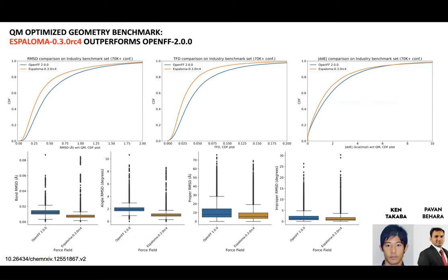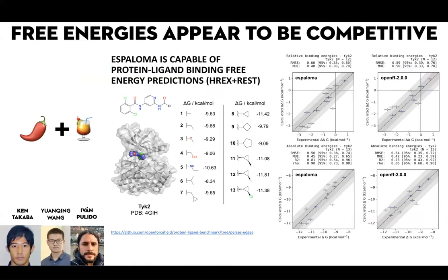We've gone through several iterations of benchmarking, identifying limitations and failures, and improving things like how we treat improper torsions. It turns out we were trying to predict too many improper torsions, and there are still things to refine about how we assign torsions — we let it assign any sign, so you can get the phase as a continuous parameter from n=1 through n=6 periodicity. We've had to trim that to limit it to n=1 or n=2 for impropers, as Open Force Field does. The quality metrics suggest it's doing very well on the industry-nominated benchmark set, and also doing reasonably well on free energy calculations, rivaling Open Force Field 2.0 in accuracy.